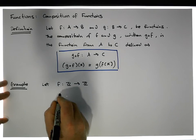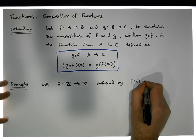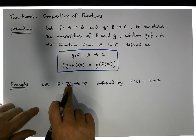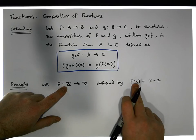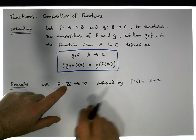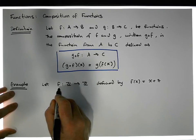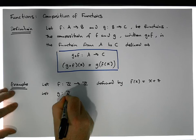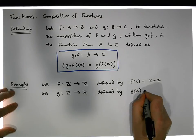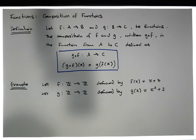Let F be a mapping from the integers into the integers, defined by F of X equals X plus 7. All this function does is take any integer value from its domain and add 7 to it. Since an integer plus an integer gives an integer, this is a well-defined function. Let G also be a function from Z into Z, defined by G of X equals X squared plus 2.